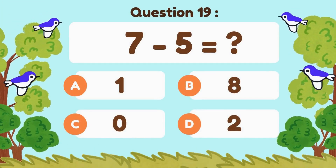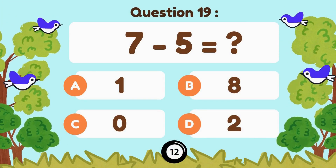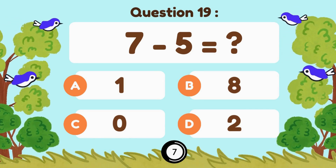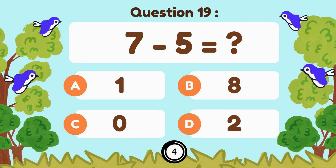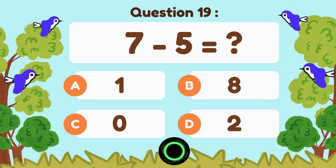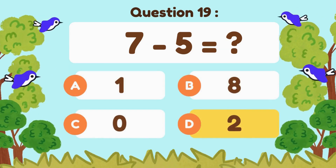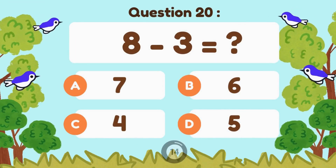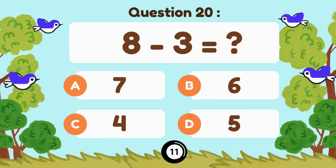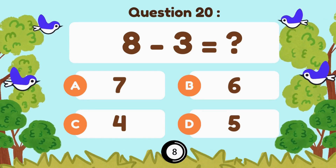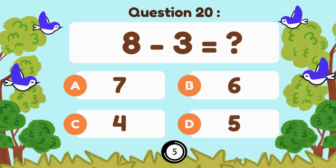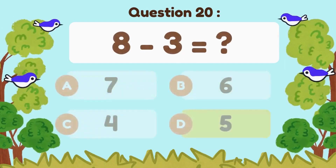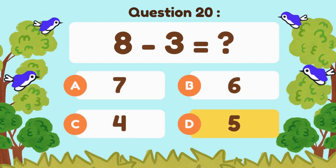7 minus 5... 7 minus 5 is 2. 8 minus 3... 8 minus 3 is 5.